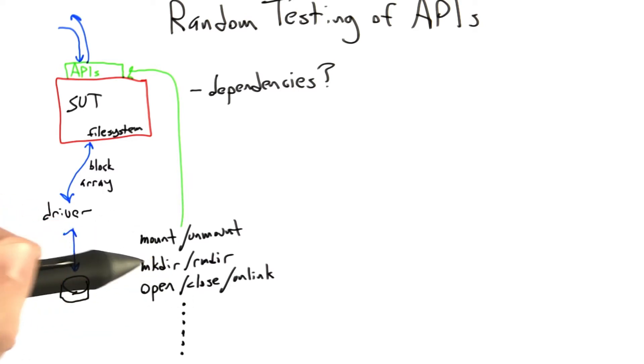Because if we do that, we're going to be mounting and unmounting the thing so often that the file system code is never going to get into the kind of steady state that we're going to need it to be in in order to do effective random testing of it.